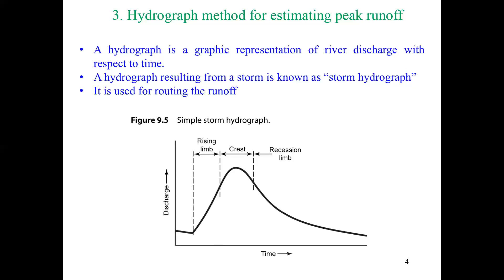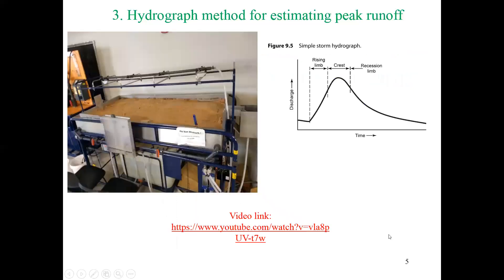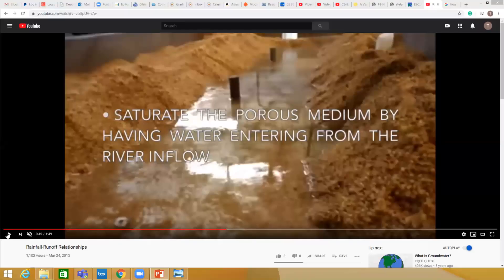Now, why doesn't the hydrograph start from zero? To explain this, let's look at a lab video from our fluid lab showing a rainfall-runoff experiment. In this setup they made a river on the bed and supplied a constant flow — that's just river flow with no rainfall.